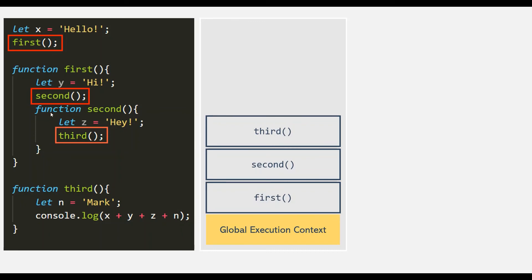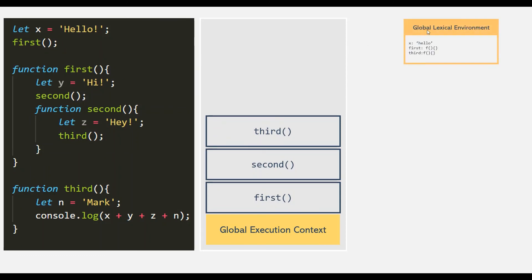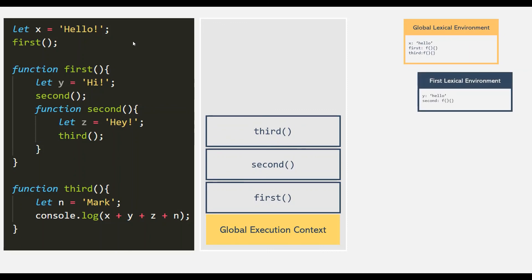Let's see how the scope chain of this program will look. The lexical environment of the global scope will contain all the variables and functions declared there. In this example, variable x, and the first and third functions are declared in the global scope, so the global lexical environment contains those variables, with its outer variable set to null. This is how the lexical environment for the first function will look when it is called: it stores variable y, and the second function is also declared inside the first function, so it is stored in this lexical environment, which also points to the global lexical environment.